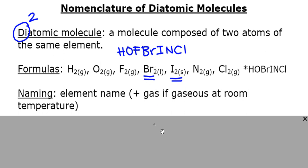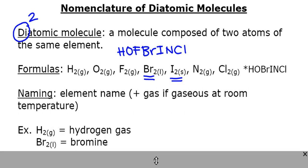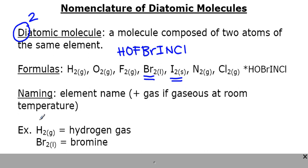If the element is a gas at room temperature — so not bromine and not iodine — the word 'gas' is often included in the name. For example, if asked to write the formula for hydrogen gas, you write H₂(g), and its name is simply 'hydrogen gas.' For bromine, the formula is Br₂(l), and the name is just 'bromine' — you don't use the word liquid. The only trick is remembering which elements fall into this category.